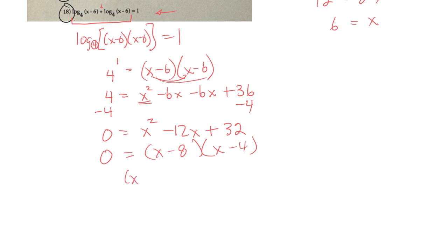So then x minus 8 equals 0, or x minus 4 equals 0. Add 8 to both sides. Add 4 to both sides.